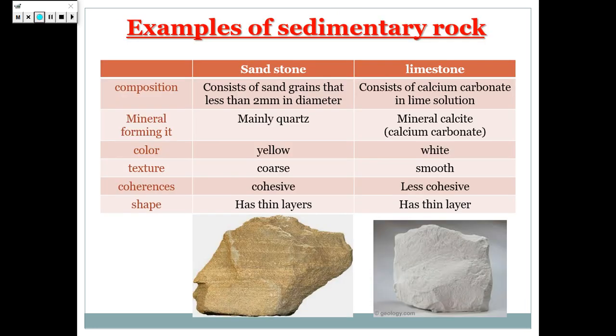Examples of sedimentary rocks are sandstone and limestone. Sandstone consists of sandy grains and has grains less than 2 mm in diameter. Limestone consists of calcium carbonate in lime solution. Sandstone consists mainly of quartz, and limestone consists of the mineral calcite, or calcium carbonate. Sandstone has a yellow color, while limestone has a white color. The texture of sandstone is coarse, while that of limestone is smooth.